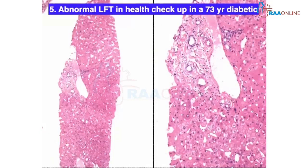For scoring autoimmune hepatitis, you need serology of all antibodies and their titers, immunoglobulin levels, negative viral serology, and morphological changes. These four criteria must be scored, and the score has to be more than seven to call it diagnostic of autoimmune hepatitis.